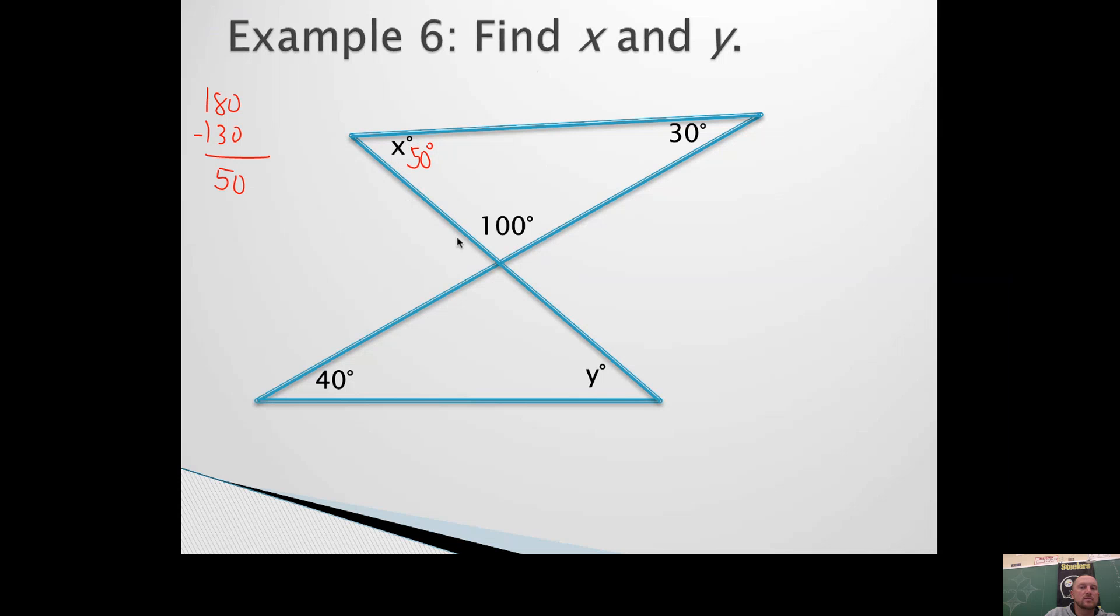So that angle is 50 degrees. This angle up top would be obtuse, or I'm sorry, this triangle would be obtuse scalene. All the angles are different, but one of them is bigger than 90.